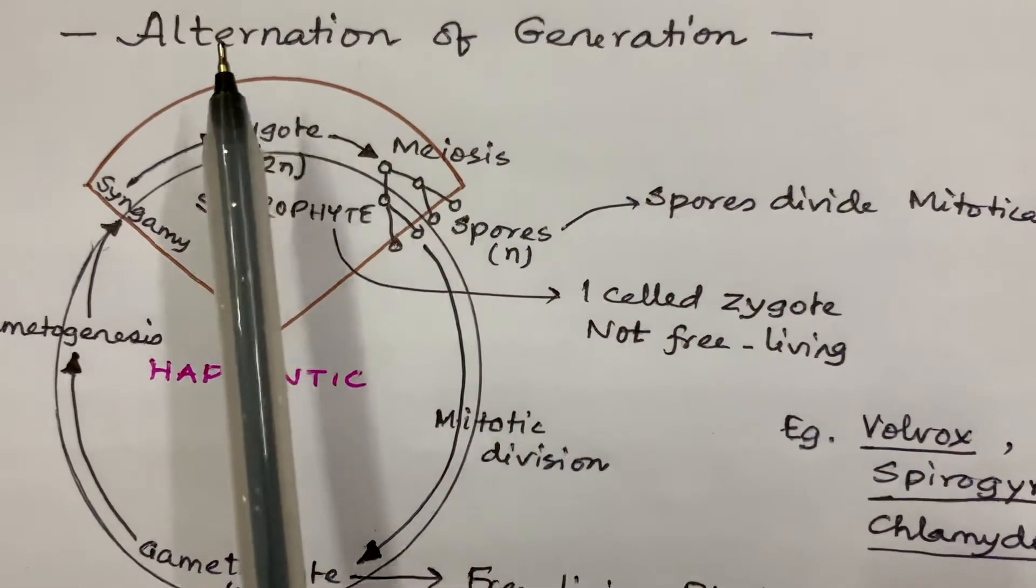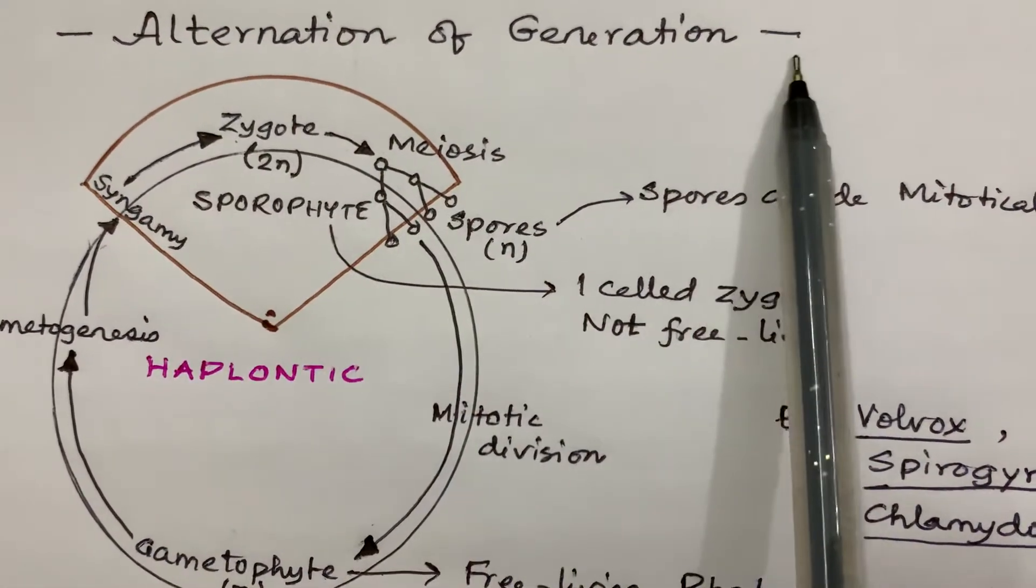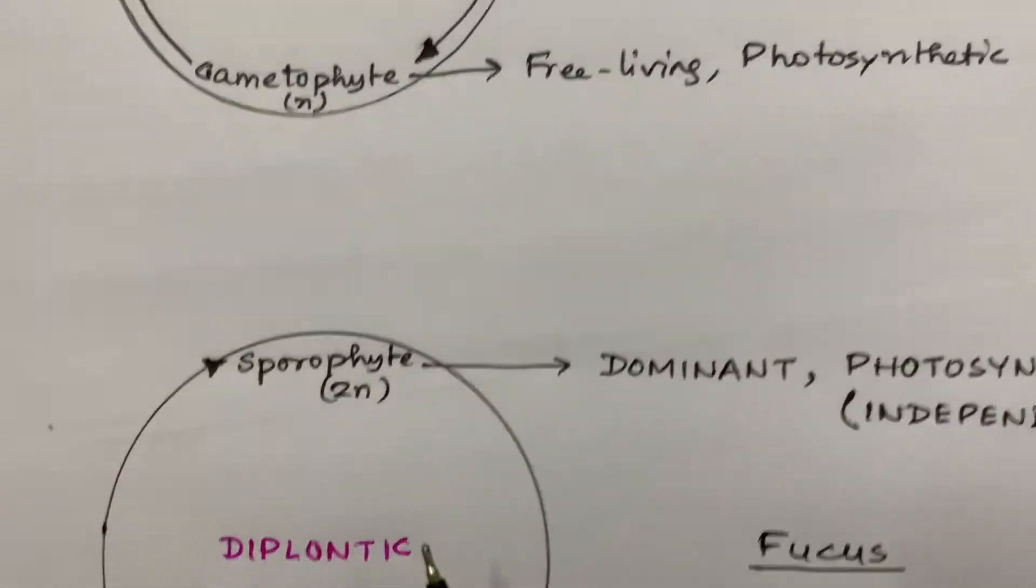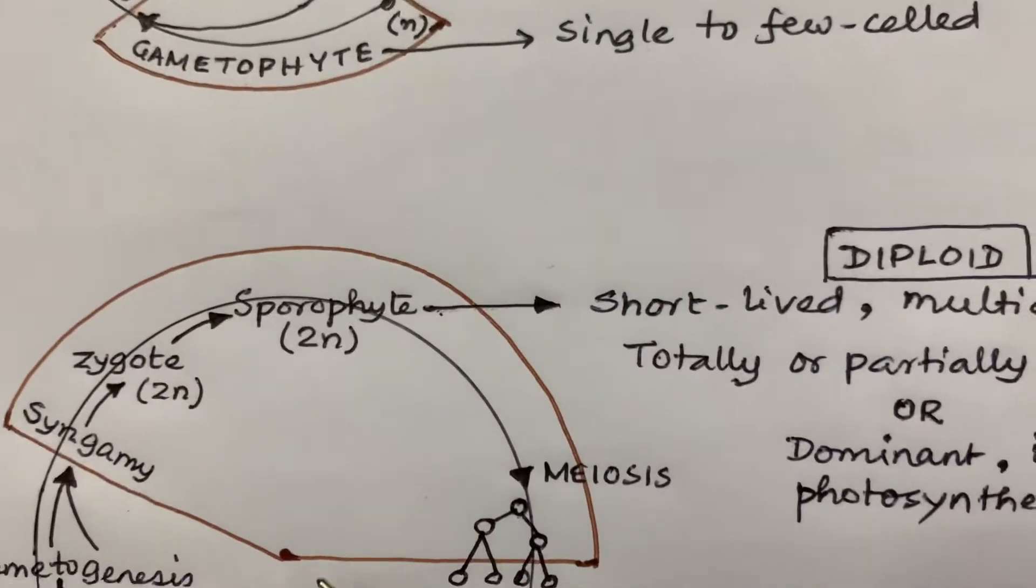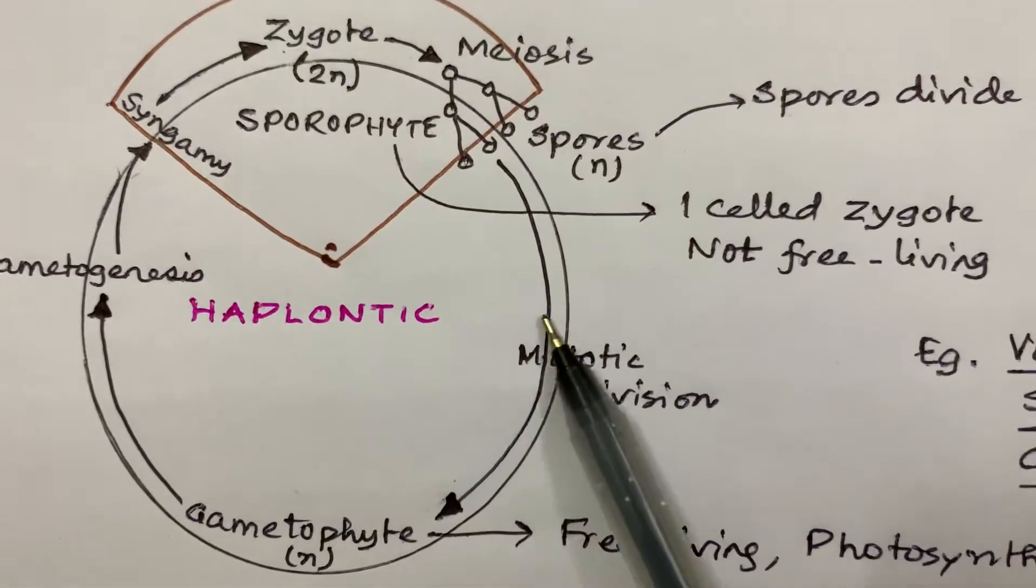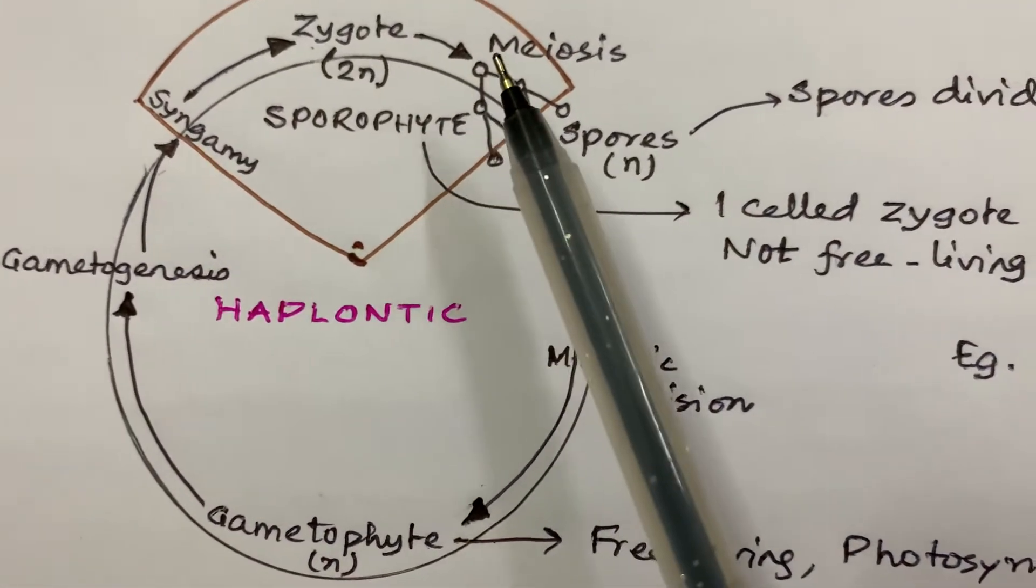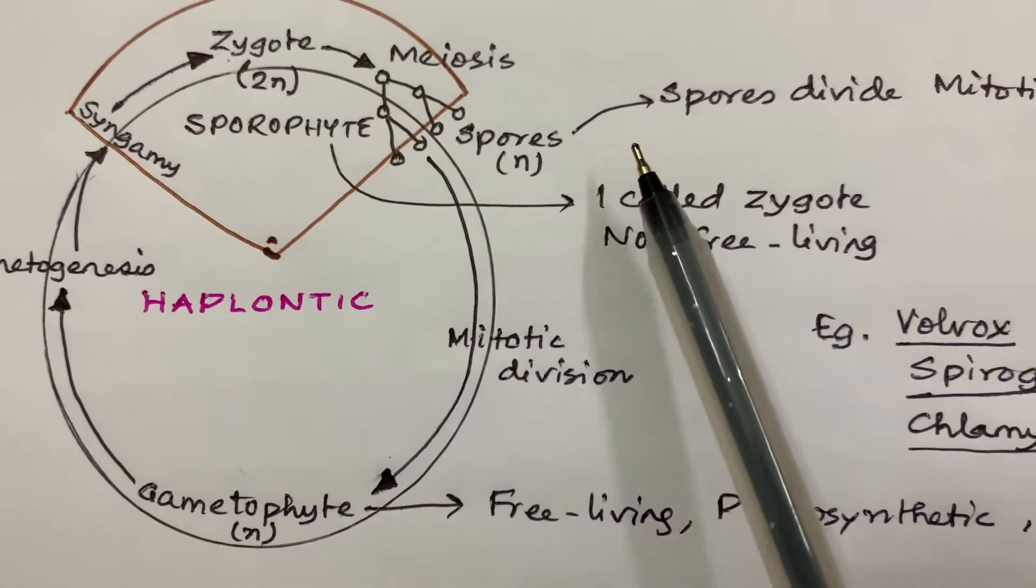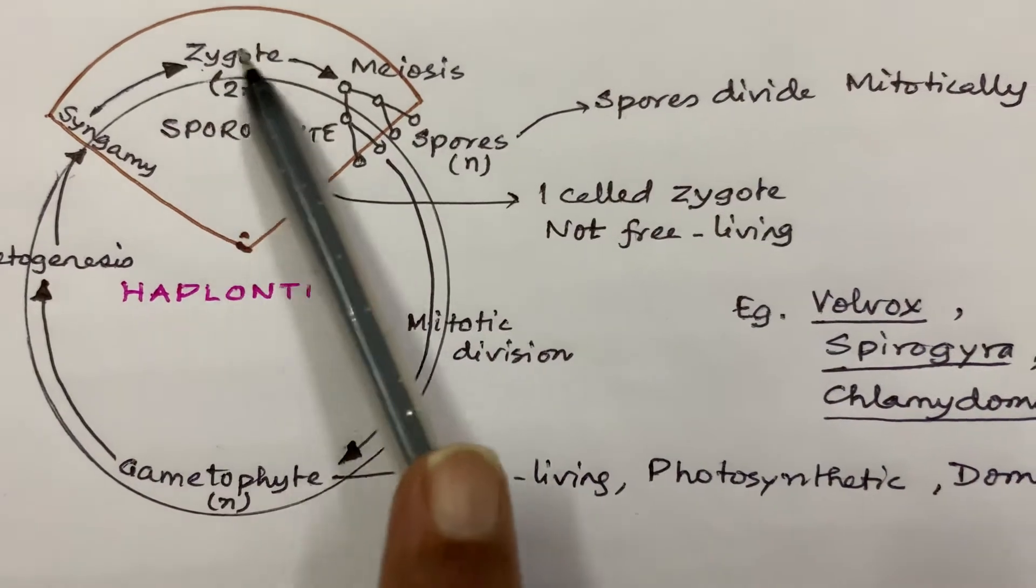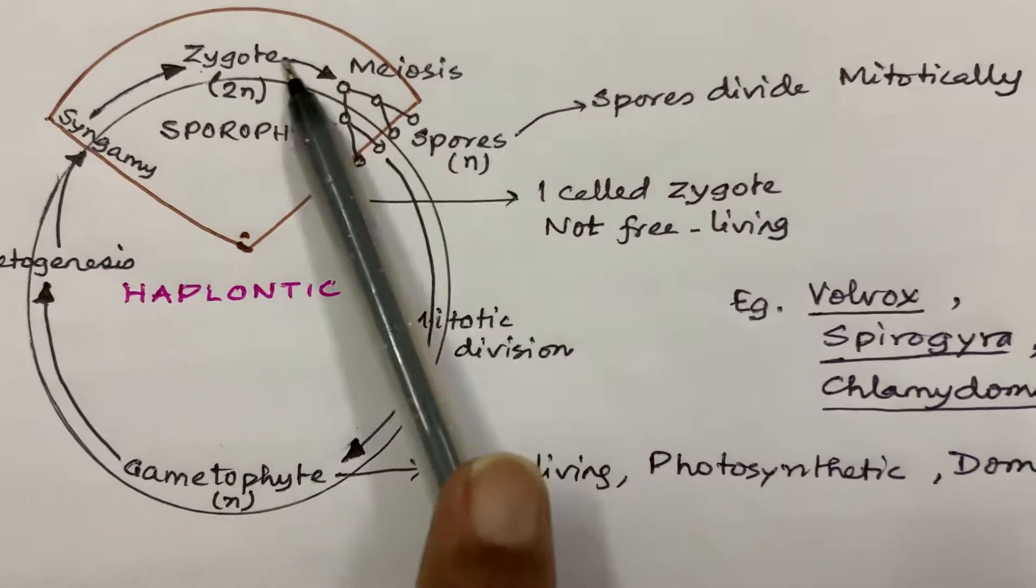Hello, welcome to the shortcuts of alternation of generation life cycle patterns like haplontic, diplontic, and haplodiplontic. Haplontic means more haploid and less diploid. Here the sporophyte generation is very less, only this much is the sporophyte generation that is 2n diploid.